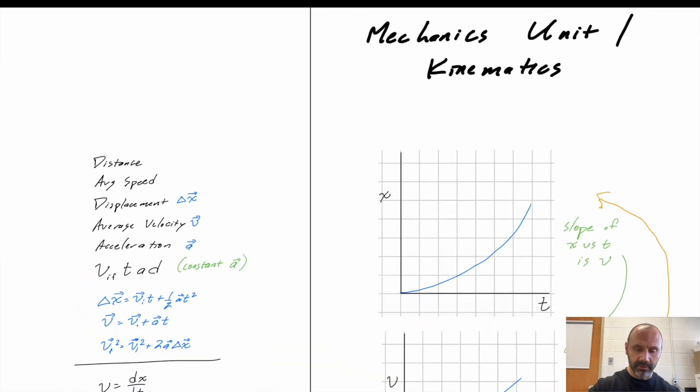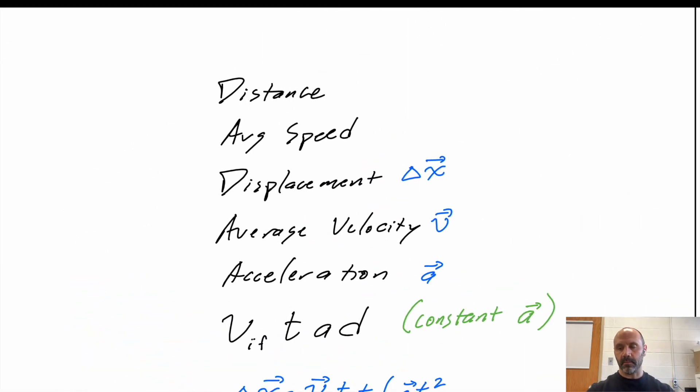So let's begin. We start with just the really basic ideas, all stuff that you probably would have covered in Honors Physics or AP Physics 1. So distance, right? The differences between distance, path length, displacement. Remember that displacement is a vector. It has the arrow above it. Distance and path length can be different things. Average speed means that you're taking that over a period of time. Average velocity, that's the displacement over a period of time. You're not talking about instantaneous velocity or instantaneous acceleration. Pay attention to those types of things, whether it's average or instantaneous.